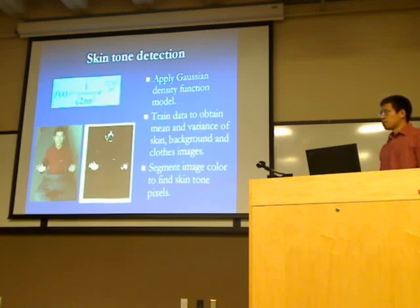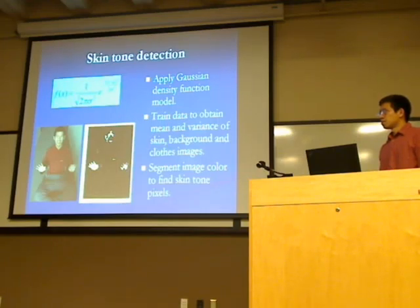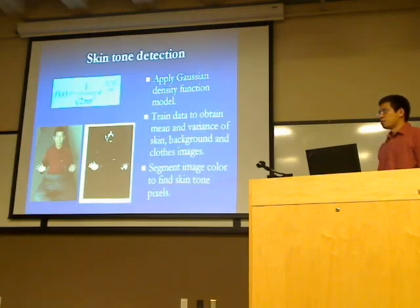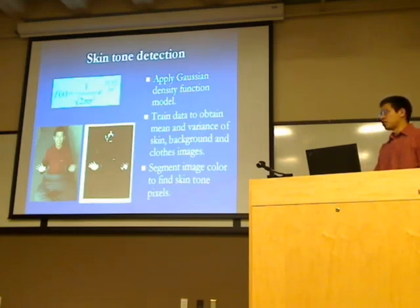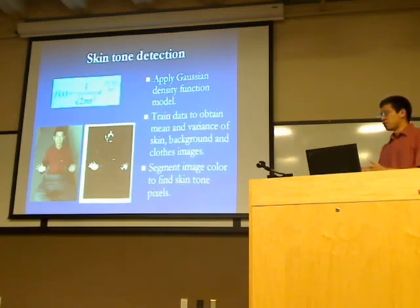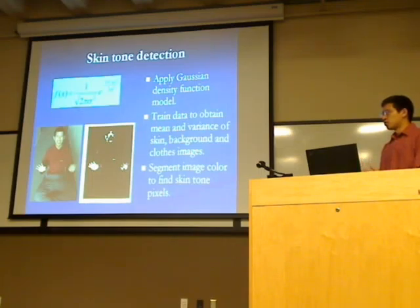The demo shows the cursor moving with the hand, but what else needs to be done? Speed is a problem, and also the skin detection algorithm is a major issue — we have to find a very specific angle and lighting without reflections, otherwise we cannot tell which part is actually the hand. We need a better algorithm and also need to address the speed because it is too slow.